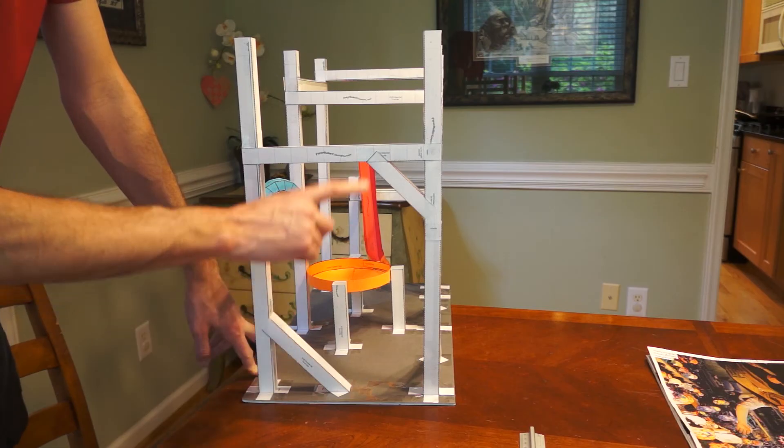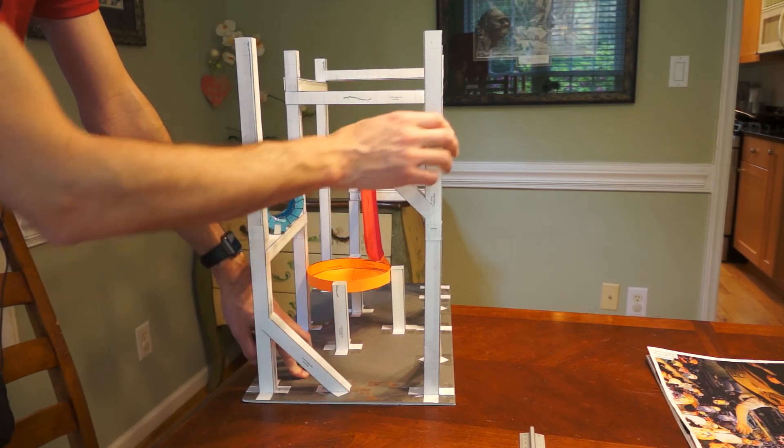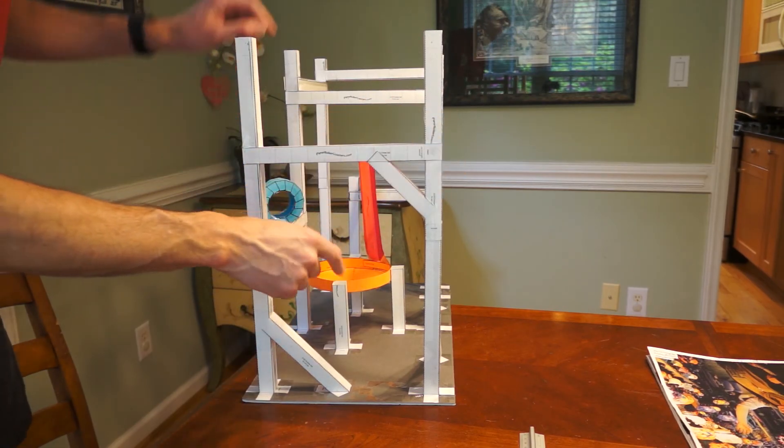Okay, now I've added two diagonal supports, one down here and one up here, and that will make it stronger in this direction. So the whole thing will become much stronger. And the more you add, the stronger your roller coaster will be.